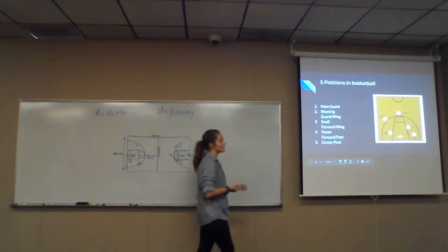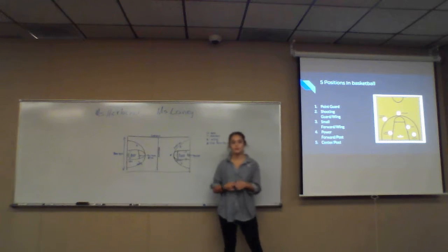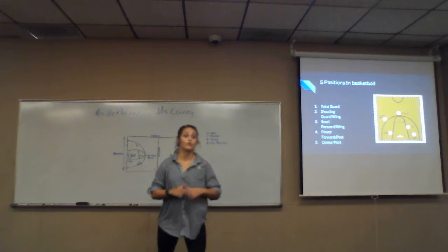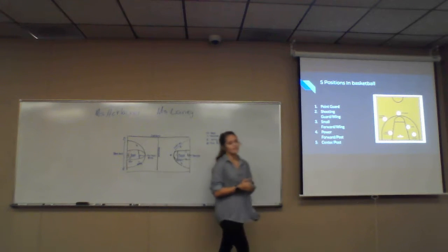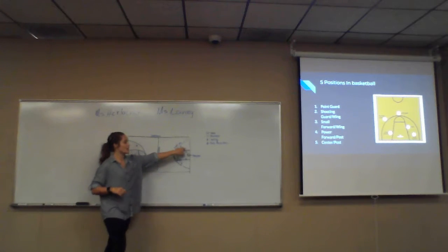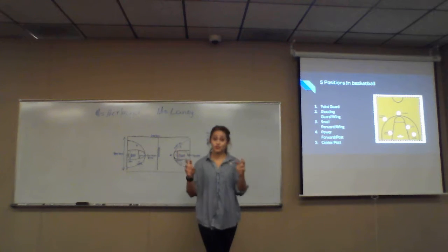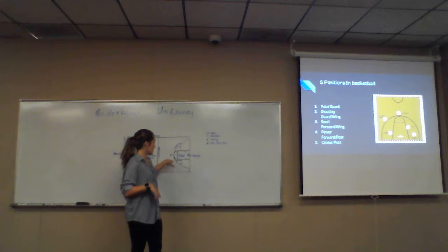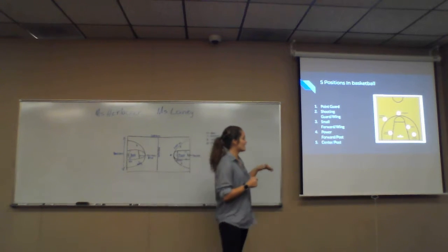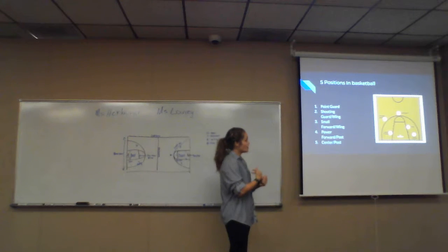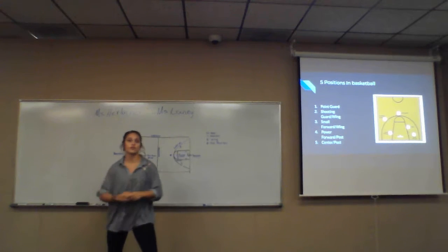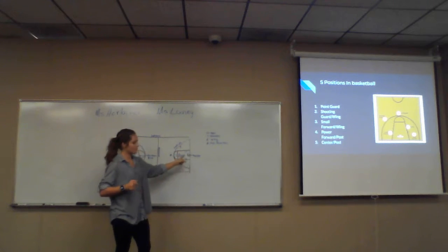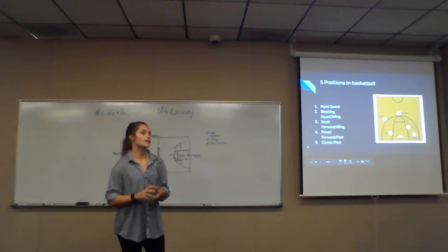Now we're going to talk about the different positions in basketball. Number one is the point guard — the person dribbling the ball down the court, setting up plays, passing off, driving, or shooting. Secondly, the shooting guard or wing plays on the outside, around the three-point line, doing mostly shooting. The small forward is similar to the shooting guard but may drive closer to the basket. The power forward plays down low, moving back and forth to get open. The center or post plays in the middle area, getting closer to the basket for jump shots.